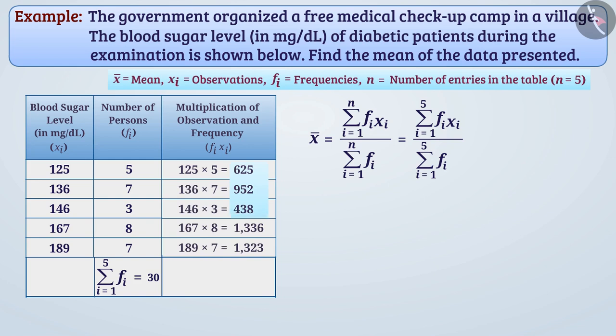We will find the sum of f_i X_i where i ranges from 1 to 5, which will be 4674. In this way, mean is equal to 155.8.